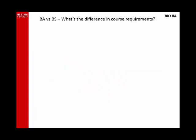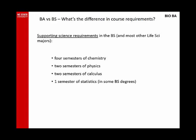The first question students usually ask is how the BA differs from the BS in Biological Sciences. The first year of courses look very similar, but after that the two degrees can be quite different. Here are the supporting science requirements in the Bachelor of Science degree — they are fairly common across most of the other life science majors.